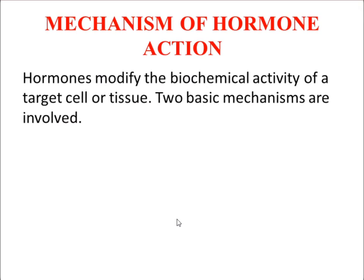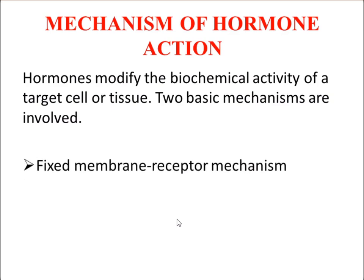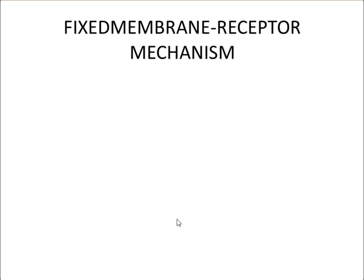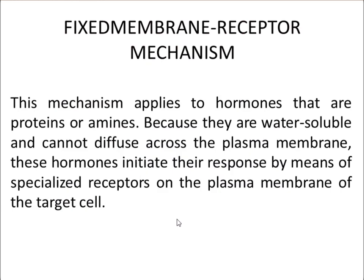Next, we discuss the mechanism of hormone action. Hormones modify the biochemical activity of a target cell or tissue. There are two mechanisms involved in hormone action: the fixed membrane receptor mechanism and the mobile receptor mechanism. The fixed membrane receptor mechanism applies to hormones that are proteins or amines — they are water soluble and cannot diffuse across the plasma membrane. These hormones initiate their response through specialized receptors on the plasma membranes of target cells.